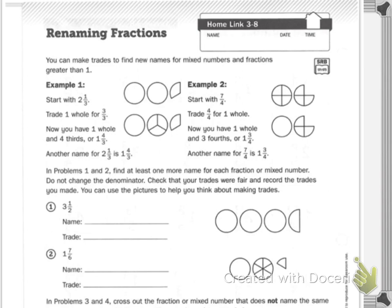Example two: start with seven fourths. You have two circles split into fourths, missing one piece. Color in the seven parts. Then you can trade the four fourths for one whole. Now you have one whole and still your three fourths, or one and three fourths. Another name for seven fourths is one and three fourths.